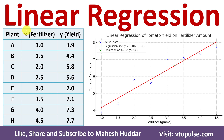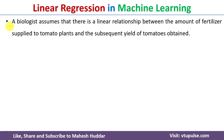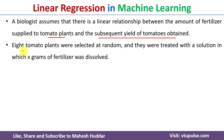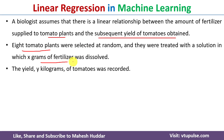Welcome back. In this video I will explain the concept of linear regression with the help of a simple solved example. A biologist assumes that there is a linear relationship between the amount of fertilizer supplied to tomato plants and the subsequent yield of tomatoes obtained. Eight tomato plants were selected at random and treated with a solution in which x grams of fertilizer was dissolved.